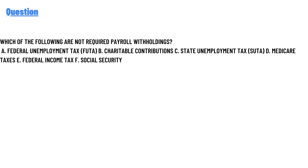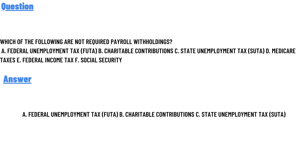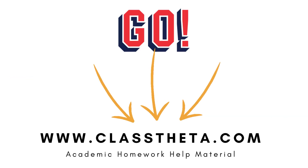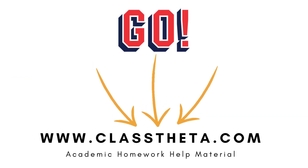Option F: Social Security. The correct answers are Option A — Federal Unemployment Tax (FUTA), Option B — Charitable contributions, and Option C — State Unemployment Tax (SUTA). Those are the answers to this question.